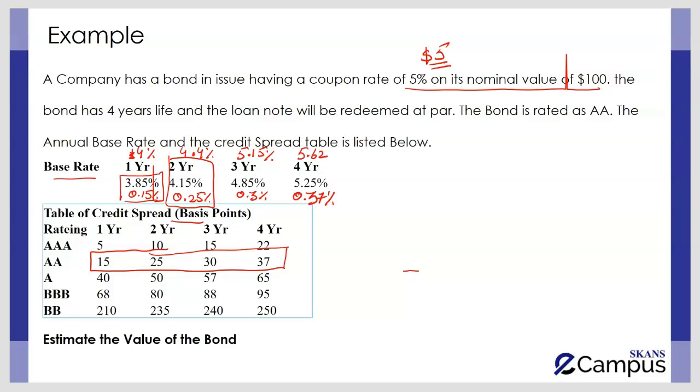So we have estimated the cost of debt for each year. Now we will make the cash flows to estimate the present value. We have here starting from year 1, 2, 3, and 4. Year 1 cash flow will be 5, year 2 cash flow will also be 5, year 3 will be 5. In year 4 the total cash flow will be 105: $5 related to the interest and $100 related to the redemption value.